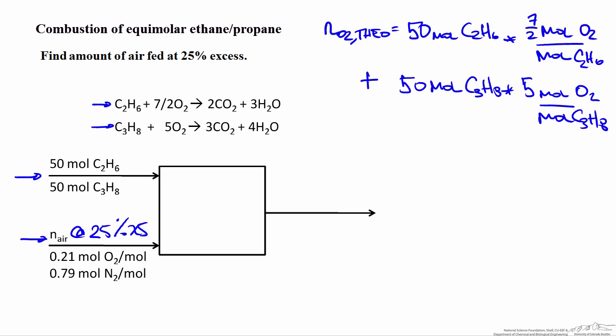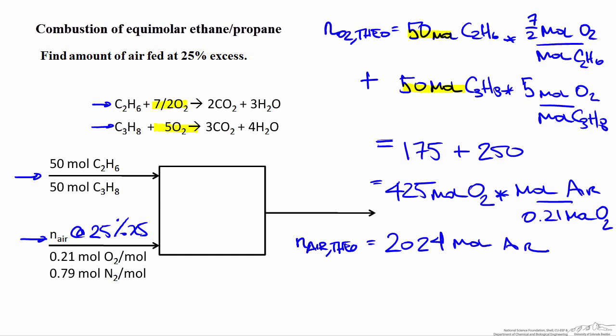From the ethane combustion reaction, 7.5 moles of oxygen are needed per mole of ethane, so 50 moles of ethane requires 375 moles of oxygen. For propane, 5 moles of oxygen are required per mole of propane, so 50 moles of propane requires 250 moles of oxygen. The total theoretical oxygen requirement is 375 + 250 = 425 moles. Dividing by 0.21 moles of oxygen per mole of air gives a theoretical air requirement of 2,024 moles.